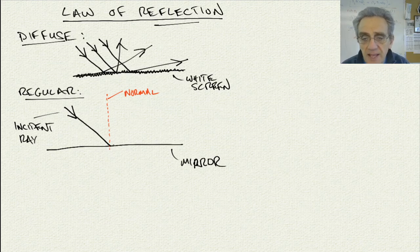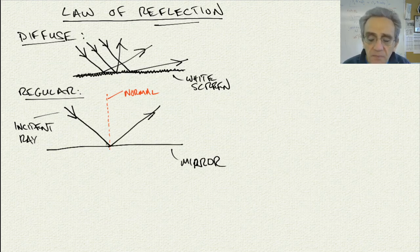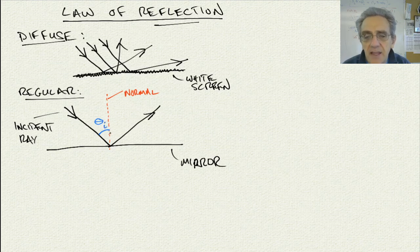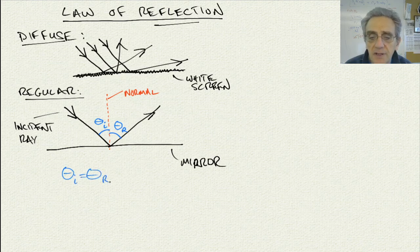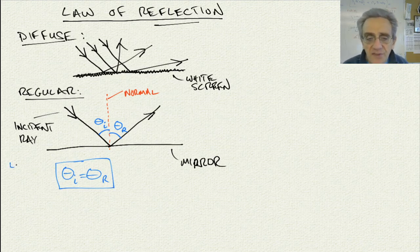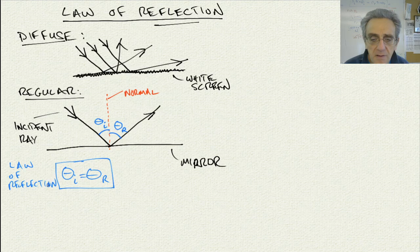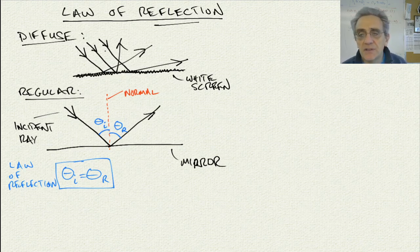When we have the reflected ray, this angle here is called theta i, and this angle here is called theta r. Both of these angles are measured towards the normal. The law of reflection states that theta i is equal to theta r. Those two angles are equal for regular reflection. For diffuse, it's just random directions and there's no rhyme or reason to it.